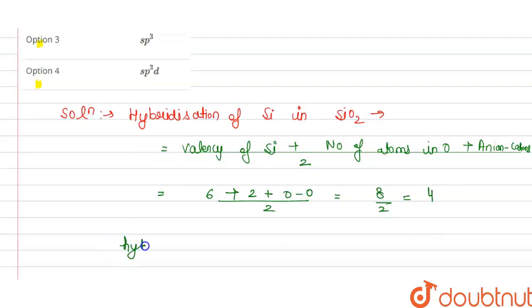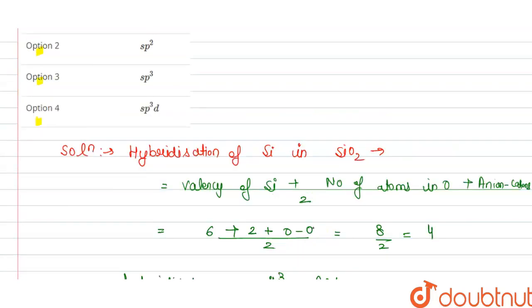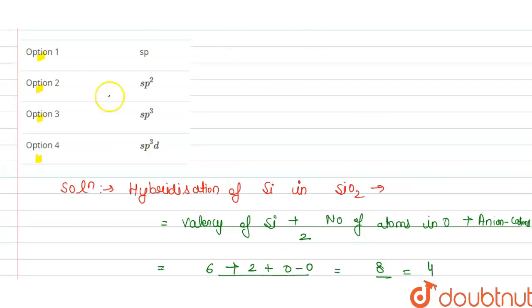So, from this we can say that hybridization is, for 4 we have the SP3 hybridization and this is the answer for this question. So, from this we can say that option C is correct. Thank you.